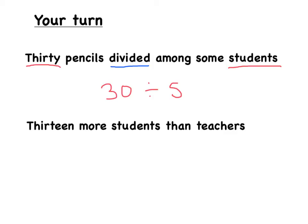Our next example is thirteen more students than teachers. So, it looks like we are going to be adding since it's talking about how there are thirteen more students than teachers. So, what we're adding together is the number thirteen. And we don't know how many teachers there are.